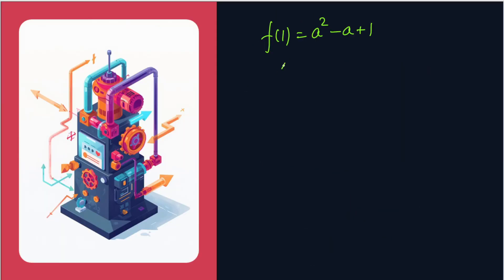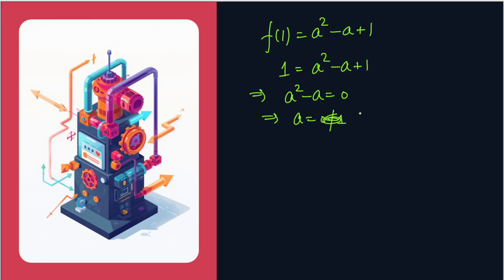Since F(1) = 1, we have A² - A + 1 = 1, which implies A² - A = 0, so A(A - 1) = 0. This gives A = 0 or A = 1.